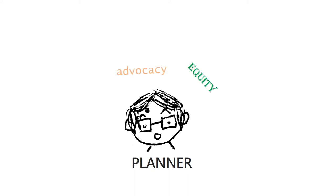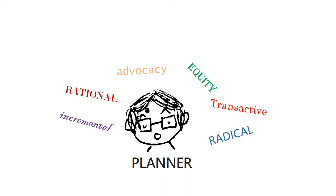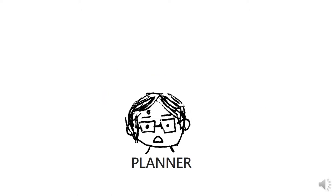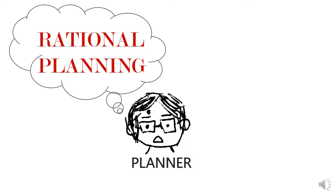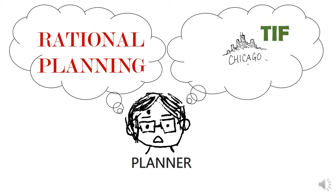In light of all the theories we've learned, there are a few theories that appeal to me less than others because of the way in which they neglect to include marginalized people's opinions in the planning process. One of these is rational planning. I realized it was important for me to understand rational planning because it allows me to gain conviction in planning practices that are considerate and inclusive of all populations, sentiments, and ideas for their own communities. I used TIF planning in Chicago to demonstrate this point.